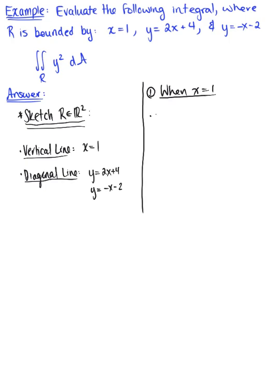When determining the bounds, the first thing to keep in mind is the y value when x is 1. Plugging one into each of our functions: y equals 2 times 1 plus 4, which gives us 6, so we have an intersection point at (1, 6). And y equals minus 1 minus 2, which gives us negative 3, so we have another intersection point at (1, -3).